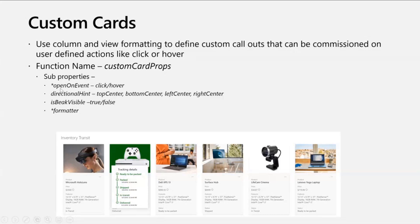To talk about the sub-properties: 'open on event' defines whether you want a custom callout to open on a click or a hover. There's a 'directional hint' — top center, bottom center, left center, or right center. There's 'is beak available' if you want a beak on the custom callout. And there's a formatter definition specifying what value you want to show on the custom card. Let me quickly jump to the demo.